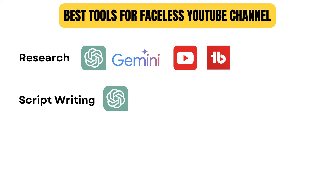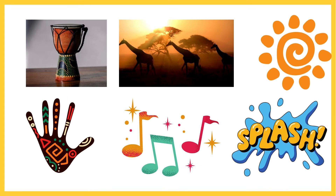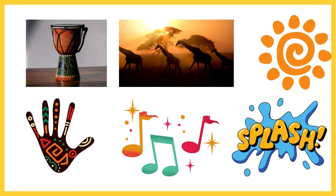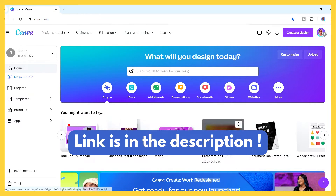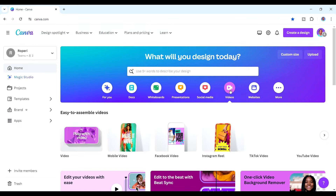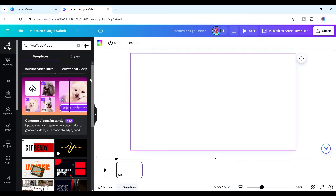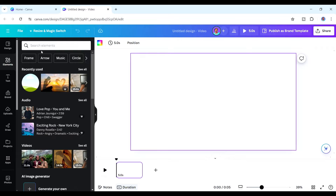We've looked at tools for research and story writing. Now let's look at the tools for creating your visuals. Number three is stock assets — things like photos, videos, graphics, music, and sound effects. One of the best places for that is Canva. Canva has numerous photos, videos, and graphics you can use for your video. If you open a YouTube video template and come to the elements section, it gives you a lot of the media you might want to use.